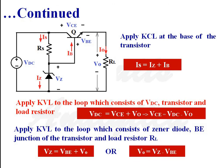Applying KCL at the base of the transistor: IS = IZ + IB. Applying KVL to the loop which consists of VDC, the transistor, and load resistance, we get: VDC = VCE + V0, or equivalently, VCE = VDC − V0.